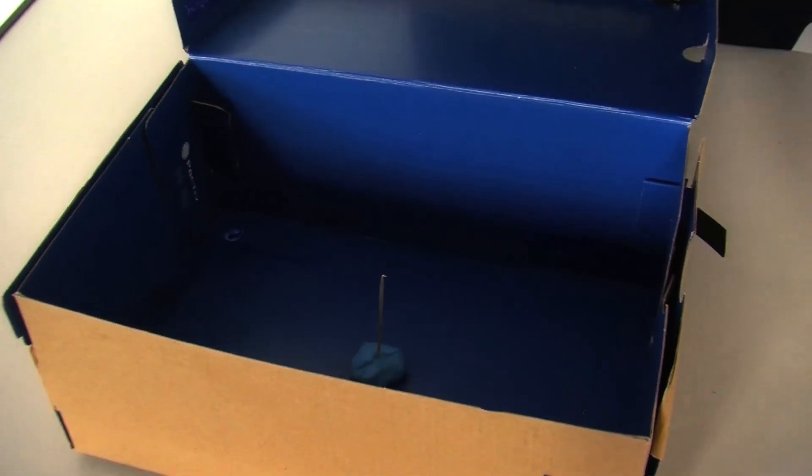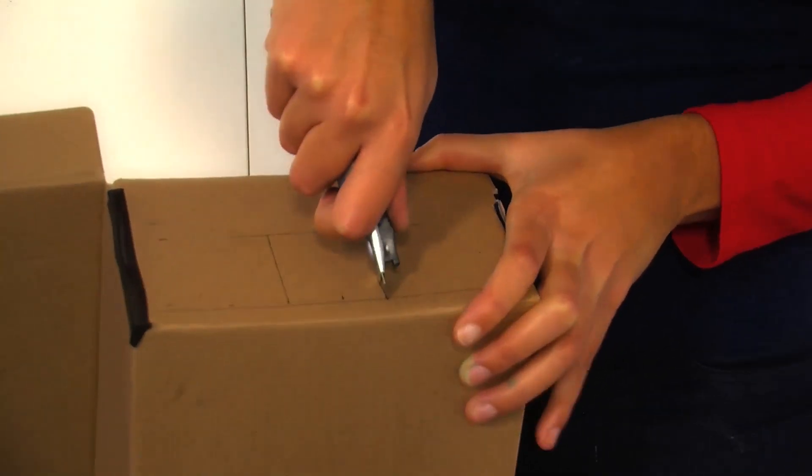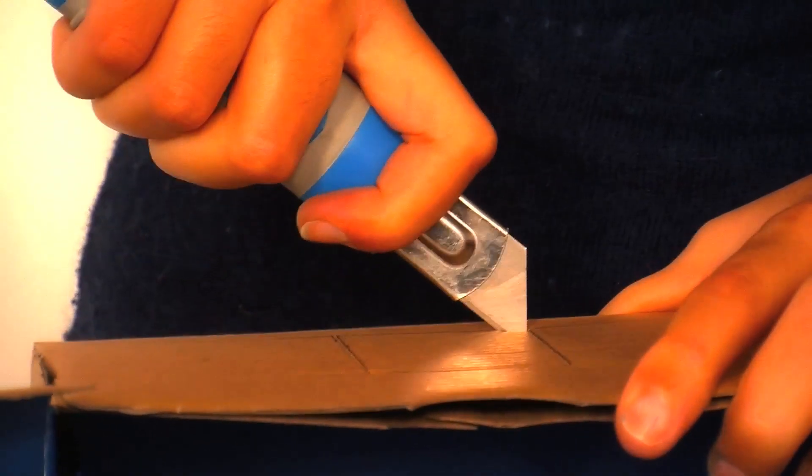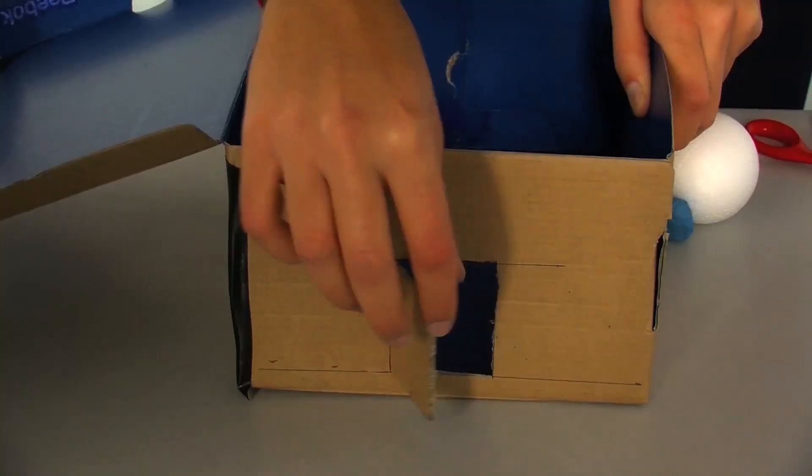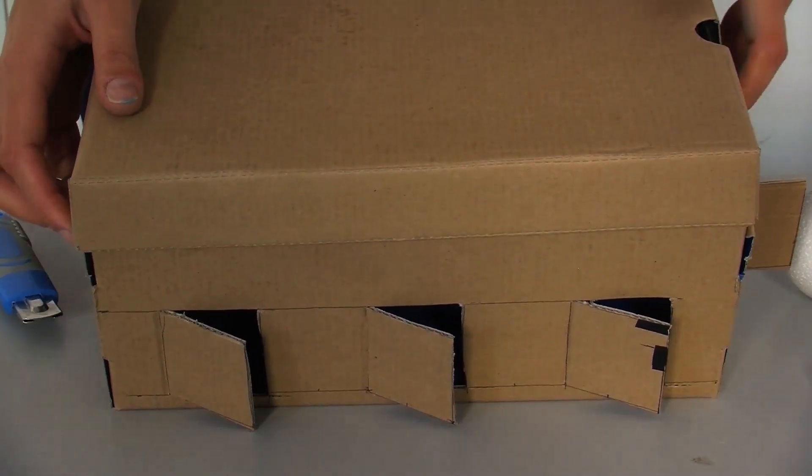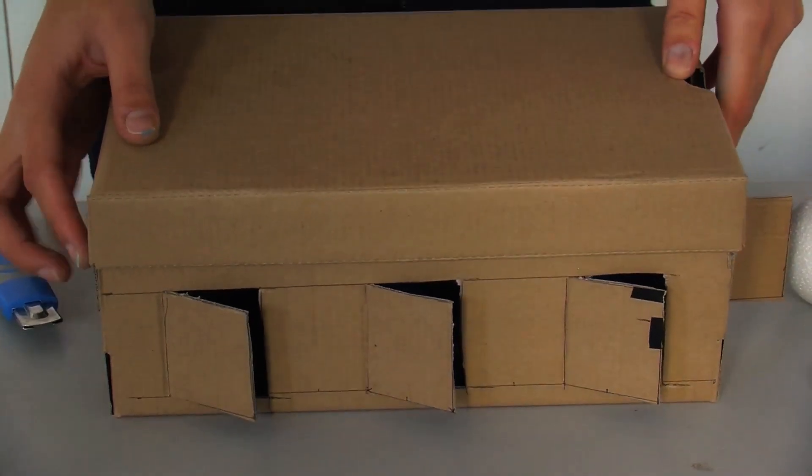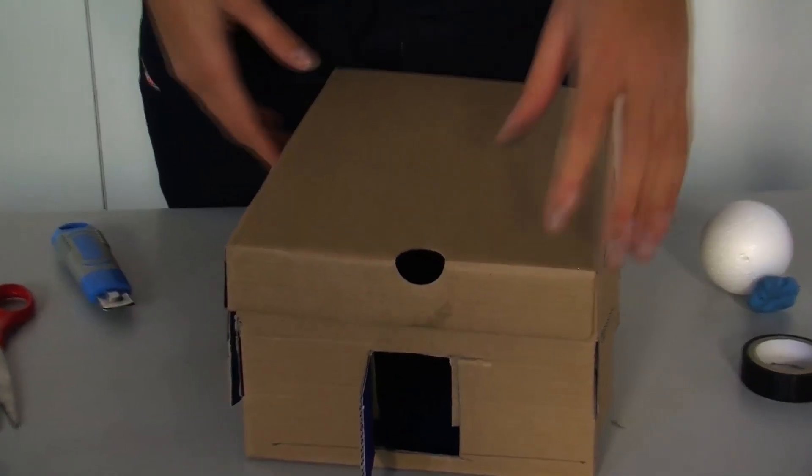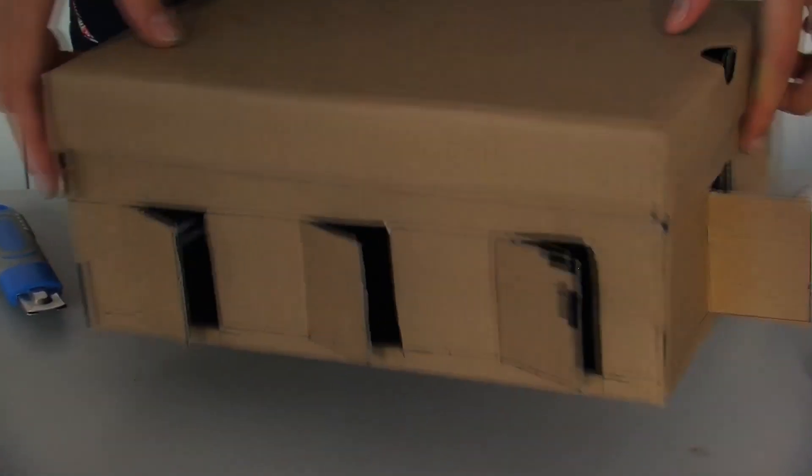Ask an adult to help you cut holes that can be closed again in the sides of the box with the help of a cutter. More precisely, you need to cut three holes on the larger sides and one in the middle of the shorter sides. All the holes must be at the same height as the moon, which you will position later.